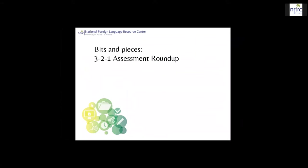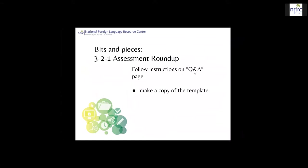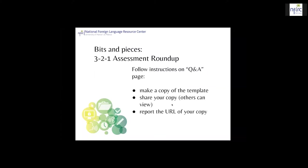At the very end of the series, you're going to have a document called the 3-2-1 Assessment Roundup. To make this document, you're going to follow instructions on the Q&A page on the website. There's a template that helps you create the document — basically you're going to make a copy of that template and share that copy. This is a Google doc; you're going to share your copy so that other people, specifically us, can look at it. Then you're going to tell us where the document is by reporting the URL so that we can go and look at it.